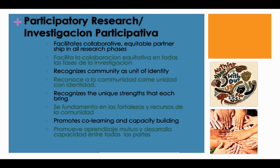CBPR also recognizes the community as the unit of identity, which makes it a particularly useful approach for community-level or neighborhood-level research. It recognizes the strengths that academia and communities each bring to the partnership, and it involves co-learning and capacity building. Through the process of engaging in partnership, co-learning occurs on both sides — including the academy learning how to do more collaborative research, since we typically learn to do research driven by the academic as the sole expert.